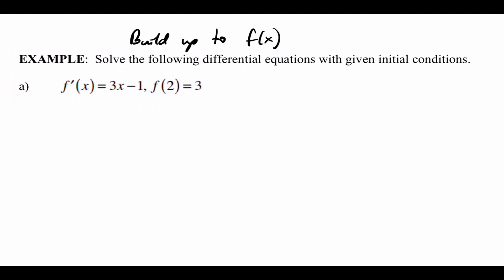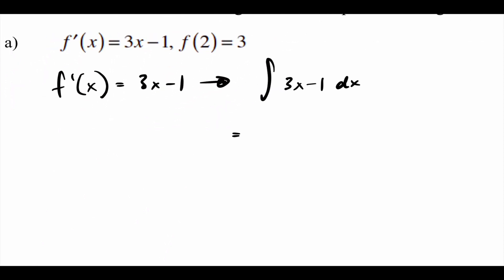We start with what's given: the derivative is 3x minus 1. To find f(x) we take the anti-derivative of the derivative. Using the power rule — add a power, divide by that power — we get 3x² divided by 2, minus 1x, plus C. Don't forget the plus C.